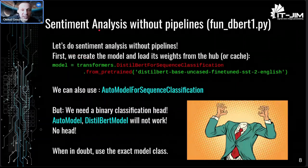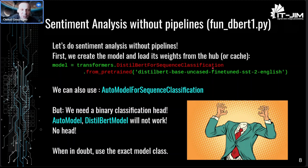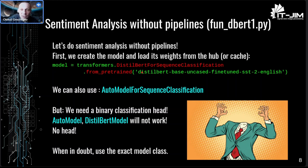Let's now try to reproduce our sentiment analysis without using pipelines, using only models. First we create the model: the model class is 'DistilBertForSequenceClassification'. Every model supported by the Transformers framework has its own class like that, which is just a PyTorch module class with a model structure. But if we want a pre-trained model we have to load the weights from Hugging Face Hub, and for that there is a standard syntax using the 'from_pretrained' static method with the model name. It downloads from the hub only the first time, then caches it on your computer. If you try different models, take care that they don't fill your hard drive.